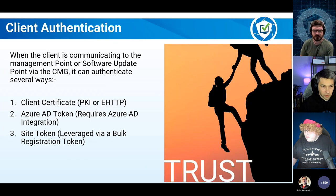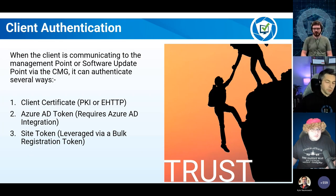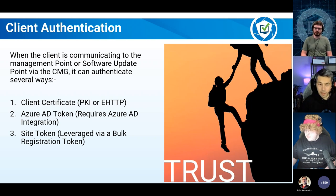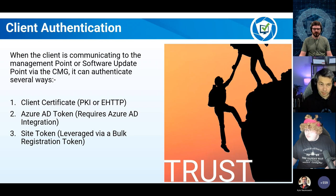This is the bit we really wanted to focus on with client authentication. What are the options for clients? If you've got a PKI, by all means carry on using that — this is how your client authenticates to the management point and distribution point essentially. So PKI is fine, or eHTTP. A lot of people were using HTTP, and Microsoft said we need to move everything to HTTPS. So some customers, instead of making that investment in a brand new PKI, decided to go the eHTTP route. It really is quite simple to set up — literally four clicks.